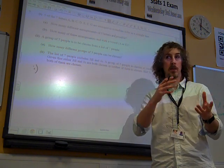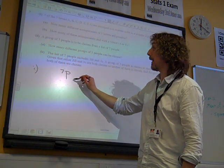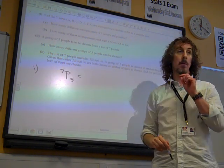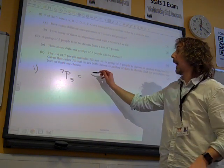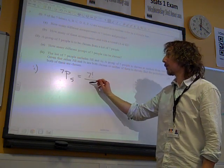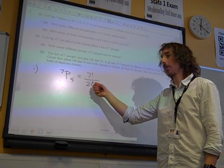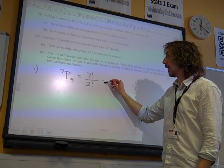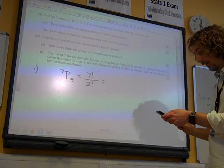The permutations is the number of arrangements. So we simply want to do 7P5. How many permutations of 5 objects selected from 7 are there? You can do that on your calculator, or you can do that using factorial notation. Either one gives you the same answer.